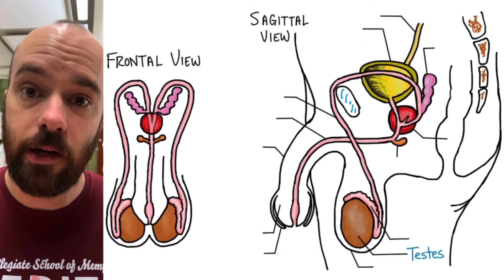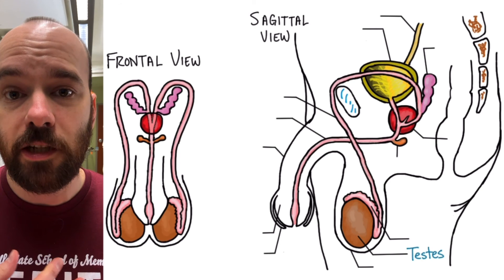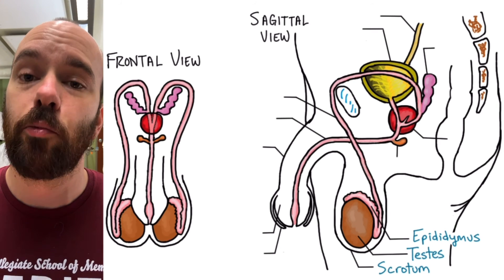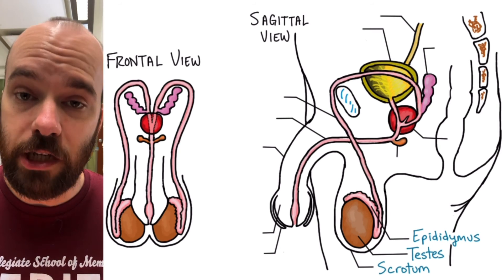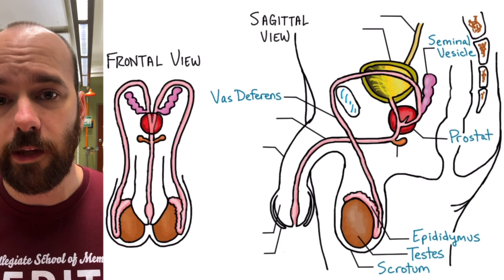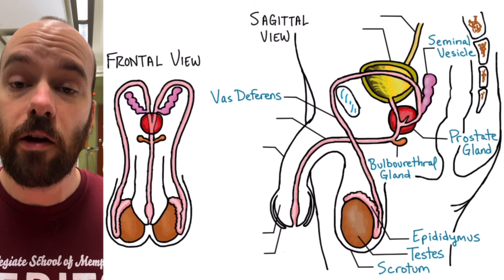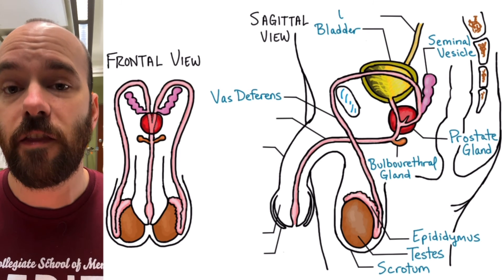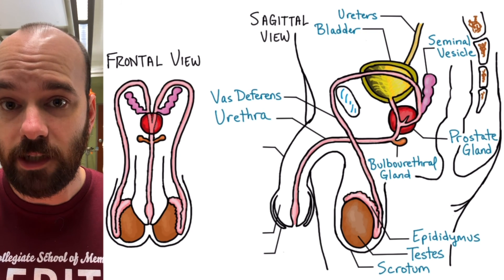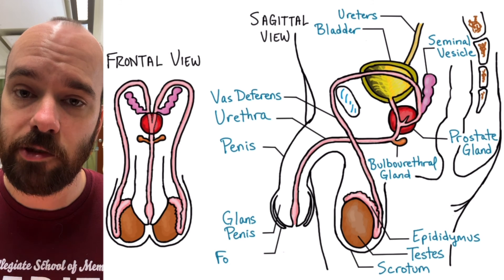First, we have the testes, which are the primary sex organ of the male reproductive system — they'll produce testosterone as well as produce and develop sperm. The sperm cells travel through the epididymis where they mature and develop, and both the testes and epididymis are contained within the scrotum, which helps regulate the temperature of the testes. During ejaculation, sperm will travel through the vas deferens and pass by the seminal vesicle, the prostate gland, and the bulbourethral or Cowper's glands, which all produce some of the fluid that makes up the semen. The bladder is connected to the kidneys via the ureters, and the urethra extends down from the bladder, connects to the vas deferens in the prostate gland, and runs to the outside of the body through the penis. The head of the penis is referred to as the glans penis and is surrounded by the foreskin.